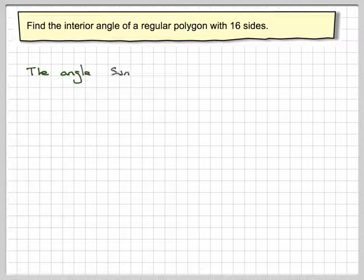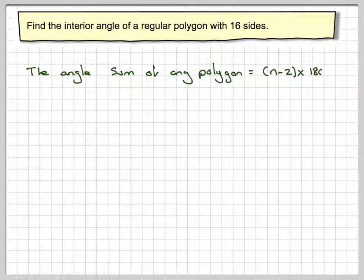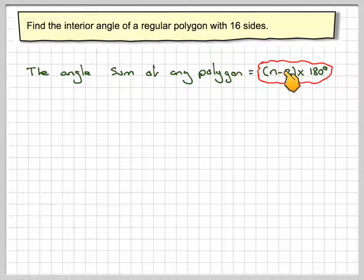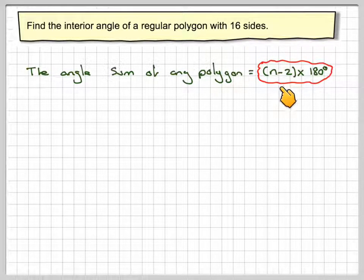There are two ways of doing this question. The first way is to use that the angle sum of any polygon is going to be n minus 2 times 180. That's because you can always draw two less triangles than the number of sides in any polygon.